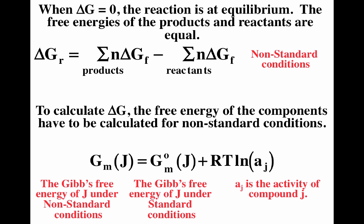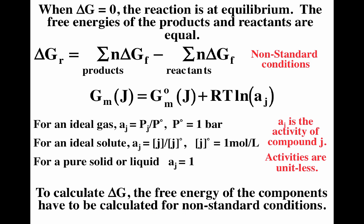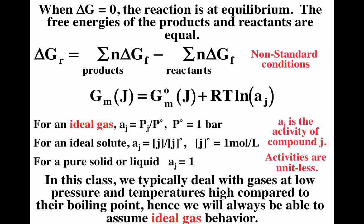In terms of non-standard conditions, to calculate products minus reactants we have to calculate G non-standard. G non-standard is equal to G standard plus RT natural log A, where A is the activity of the compound. I probably should have deltas in front of these G's to note that they are energies of formation relative to elements in their standard state. In general chemistry, for an ideal gas, the activity equals the partial pressure over one bar — dividing by one bar gets rid of the units.